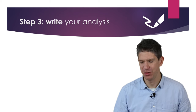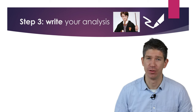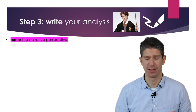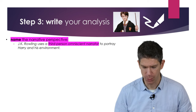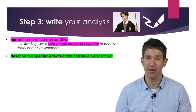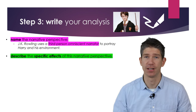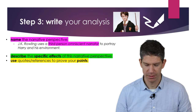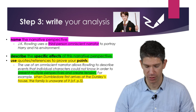Now you need to write your analysis. I've used Harry Potter as an example since many people will be familiar with the novels and films. First, name the narrative perspective: for example, 'J.K. Rowling uses a third person omniscient narrator to portray Harry and his environment.' Then — and this is really important — describe the specific effects of this narrative perspective in this novel, using quotes or references to prove your points.